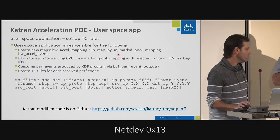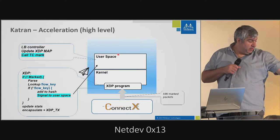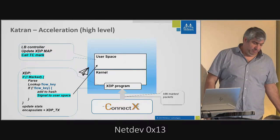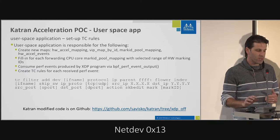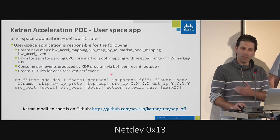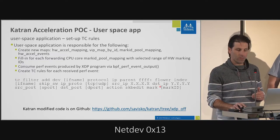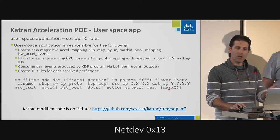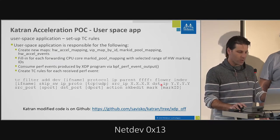The only thing you need to change in the program is just three colored lines — that's all you need to extend the application. The user space application gets the perf event from the XDP program, creates a TC filter with SKB edit mark and the mark ID. From that point on, the hardware marks packets through the completion of the hardware, and you get it on the SKB.